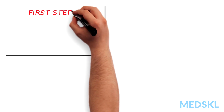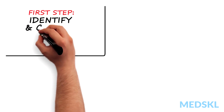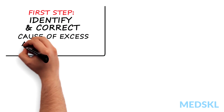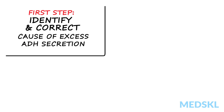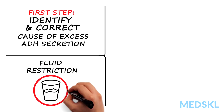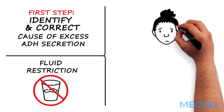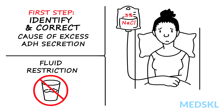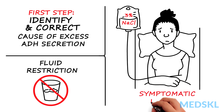When treating patients with hyponatremia, the first step is to identify and correct the underlying cause of excess ADH secretion. It is also imperative for patients to be placed on fluid restriction. However, IV fluids hypertonic to the patient's urine are indicated in symptomatic patients.